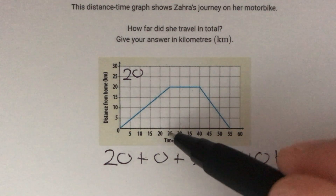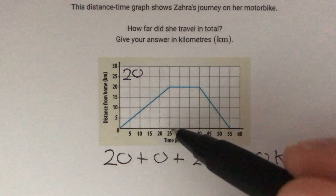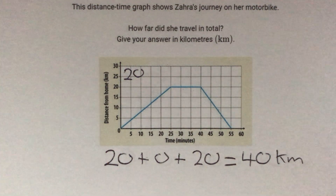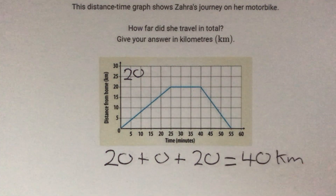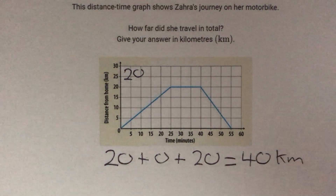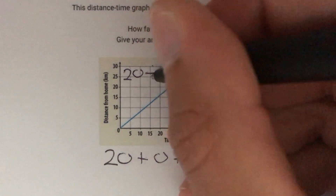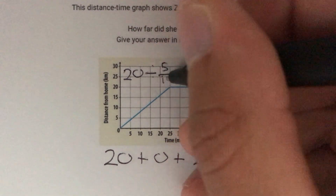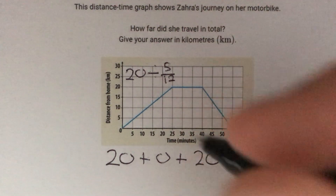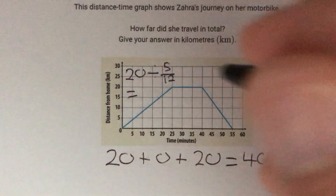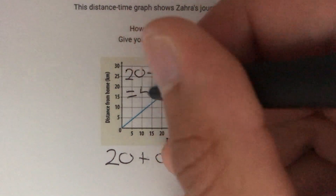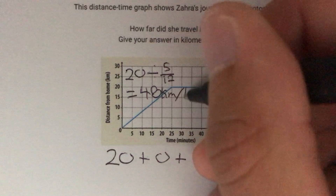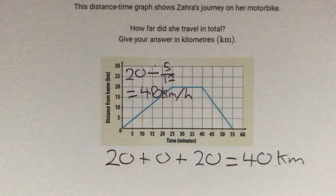25 minutes is 25 sixtieths of an hour, which we can simplify to 5 twelfths of an hour. So if we do 20 divided by 5 twelfths — and we can use a calculator for this — we get an answer of 48 kilometers per hour.